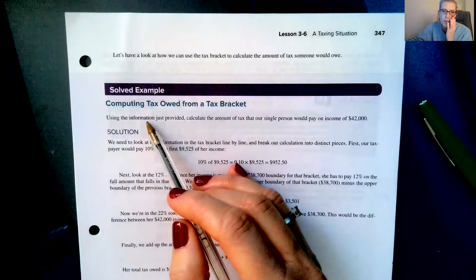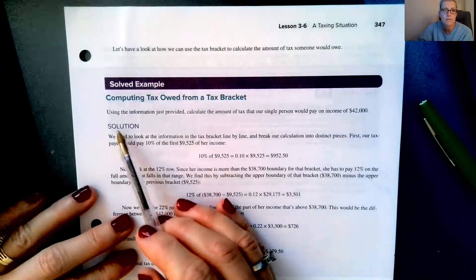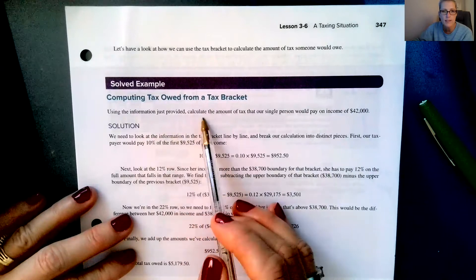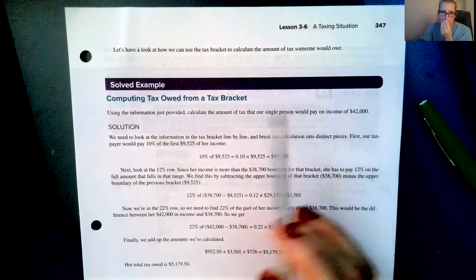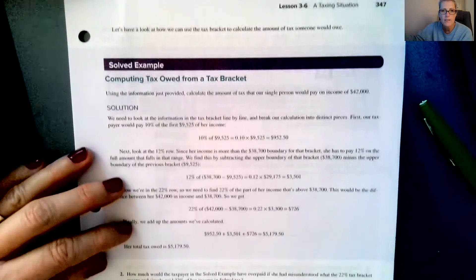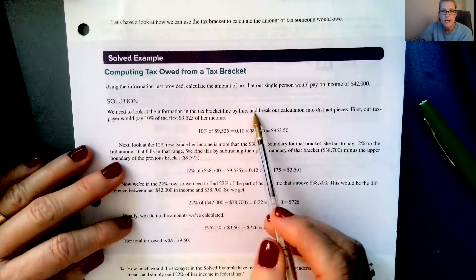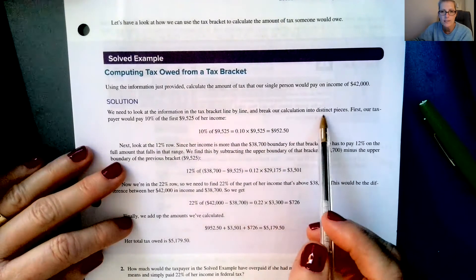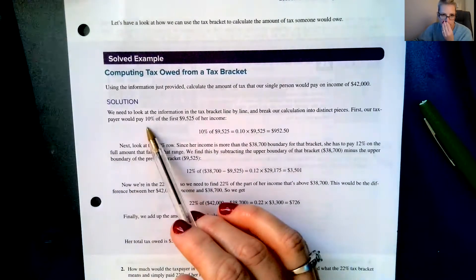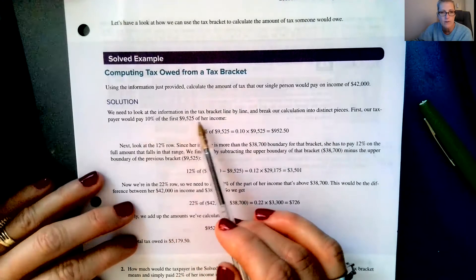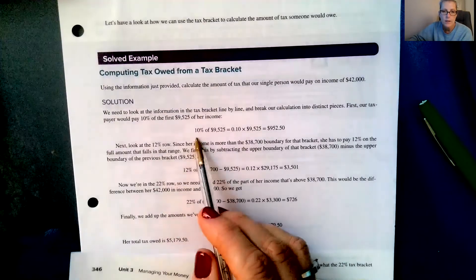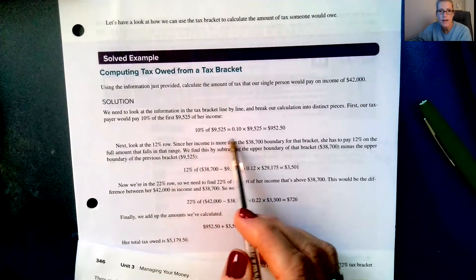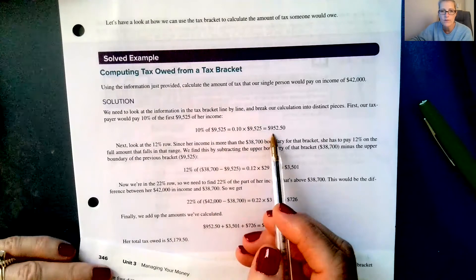So we're going to break it down. On page 347, it says computing tax owed from a tax bracket. Use the information just provided. Calculate the amount of tax that a single person would pay on income of $42,000. So it says we need to look at the information in the tax bracket line by line and break our calculation into distinct pieces. First, our taxpayer will pay 10% of the first $9,525. That's what falls right here.